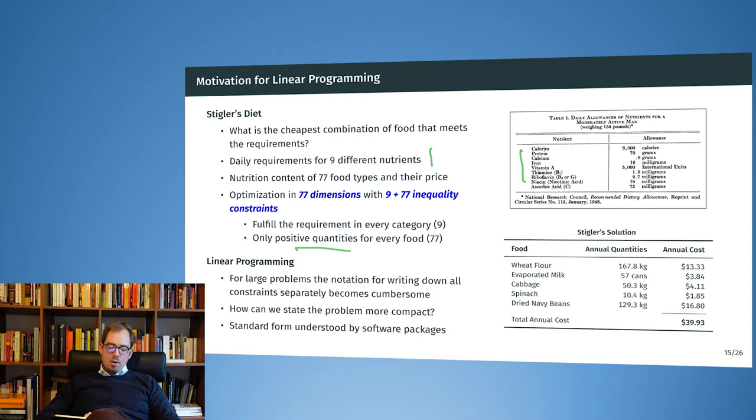Linear programming is not only a shorthand notation, it is also a standard form understood by many software packages. It's a standard way to express a certain type of optimization problem. Then I can choose between different algorithms that all understand the type of problem definition.